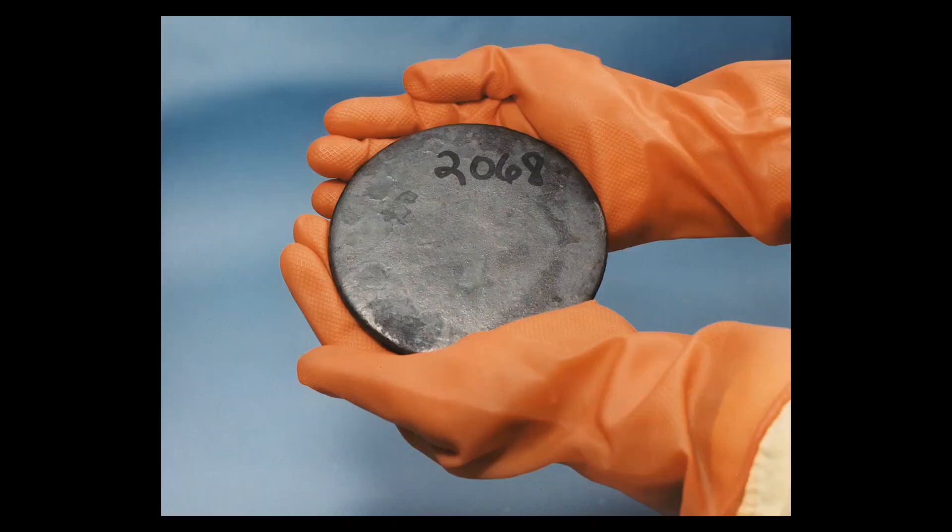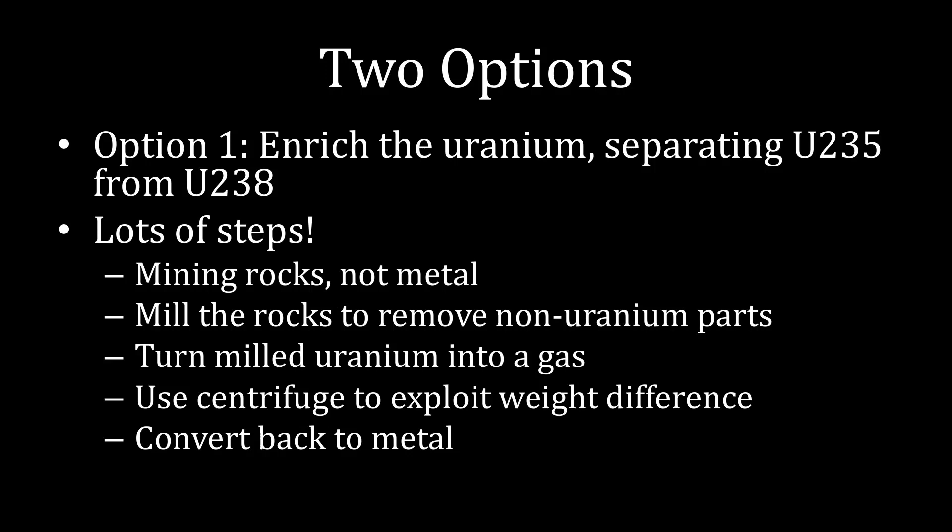Then you take that gas of highly enriched uranium and convert it back into a metal — the type of thing that would appear in a nuclear weapon. We'll talk about how those things are assembled in the next lecture. To recap option one: you enrich uranium by separating uranium-235 from uranium-238 through several steps — mining the rocks, milling those rocks, converting the milled uranium into uranium hexafluoride gas, spinning that gas in a centrifuge cascade to exploit the slight weight difference, and finally converting it back to a metal. That is the uranium option.